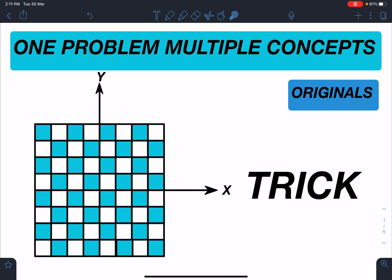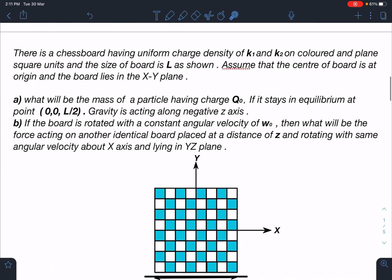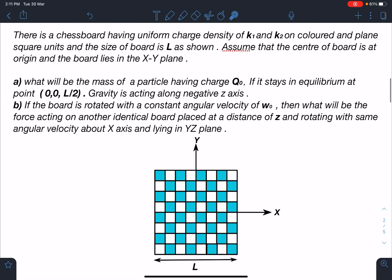Here is the statement of this problem. There is a chessboard having uniform charge density of k₁ and k₂ on colored and plain square units, and the size of board is L as shown. Assume that the center of board is at origin and the board lies in the XY plane.